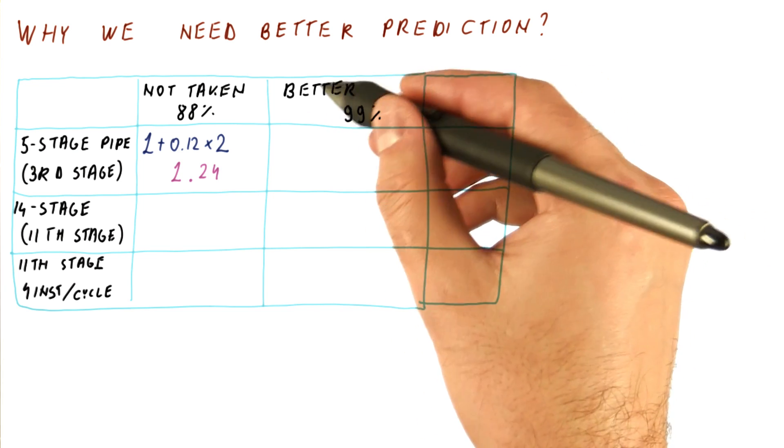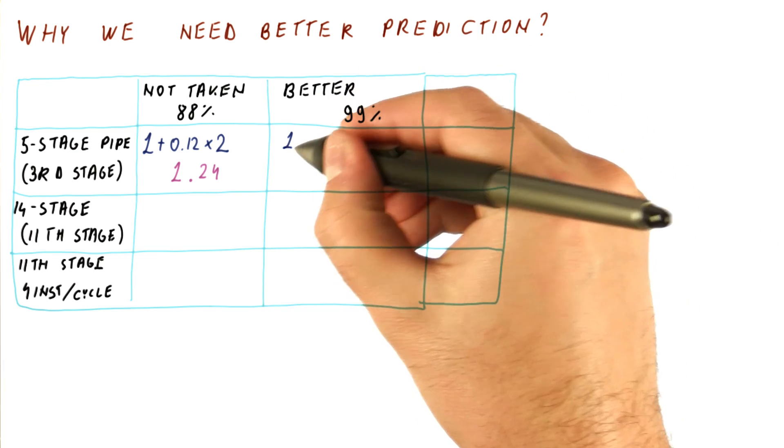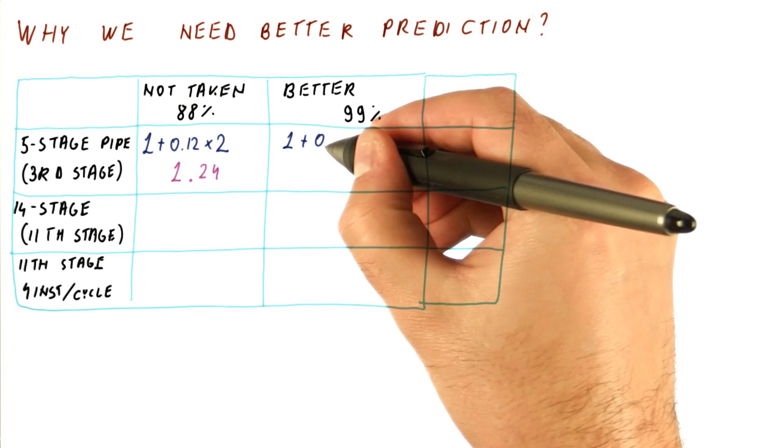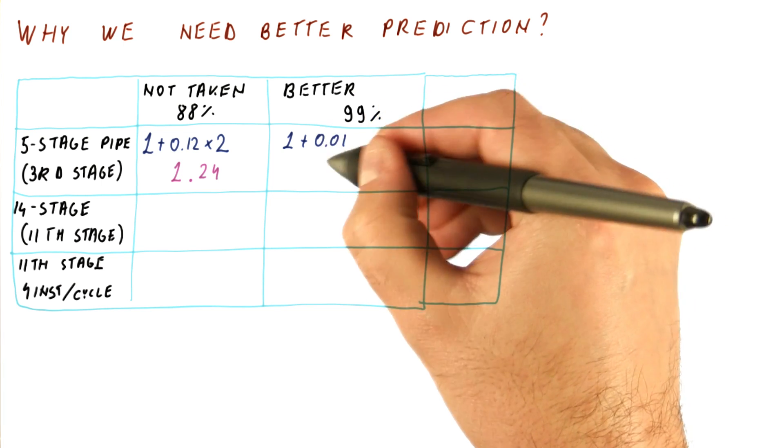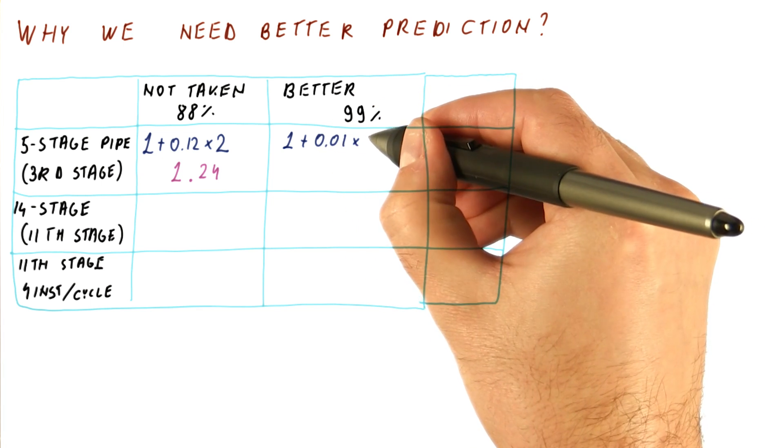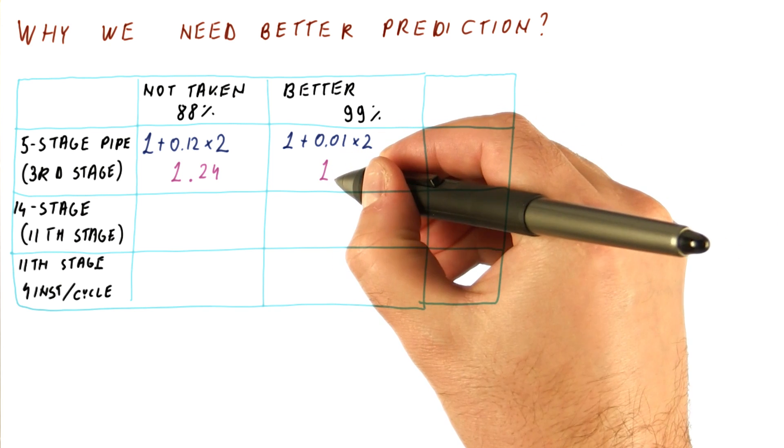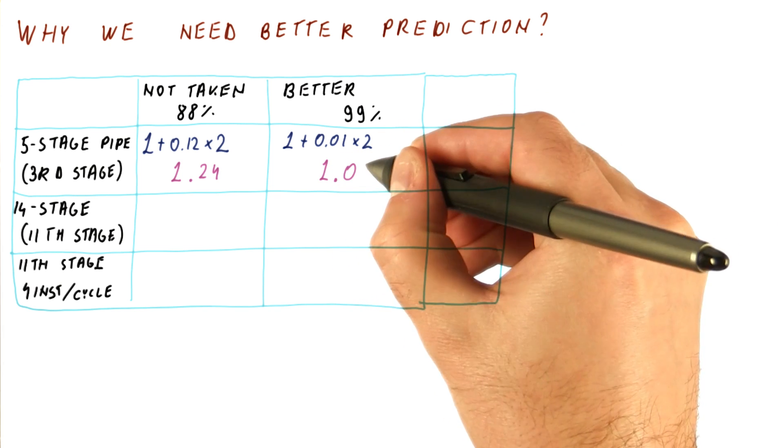What happens when we have a better predictor? Well, we now get 1 plus 0.01, only 1% of the time we mispredict, and we get a 2-cycle penalty then. So the CPI now is 1.02.